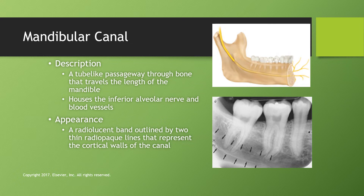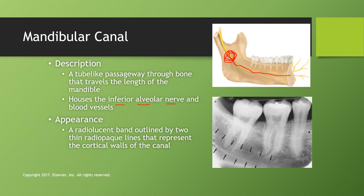The mandibular canal is a tube-like passageway through bone that travels the length of the mandible, starting back at the ramus and traveling underneath the alveolar ridge to supply all the blood and nerve endings that the mandibular teeth need. It houses the inferior alveolar nerve (IA). The appearance is a radiolucent band outlined by two thin radiopaque lines representing the cortical walls — you will always see these two thin white lines bordering the mandibular canal.